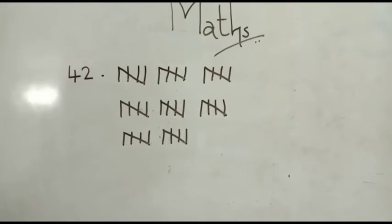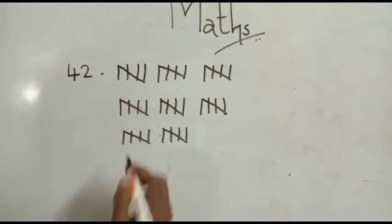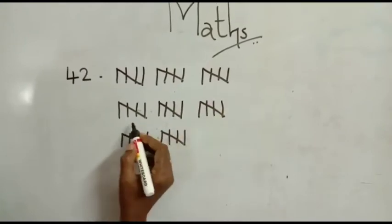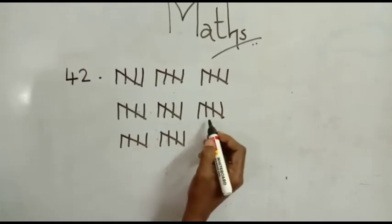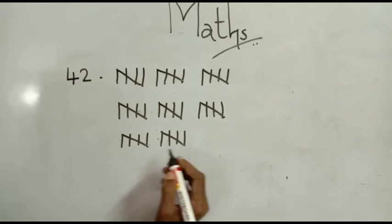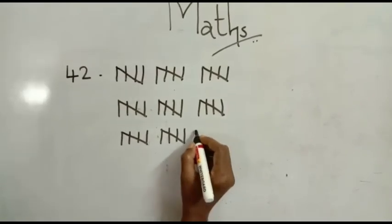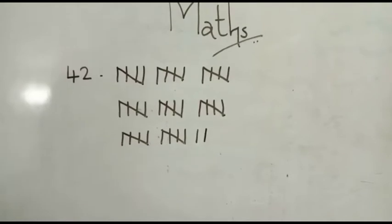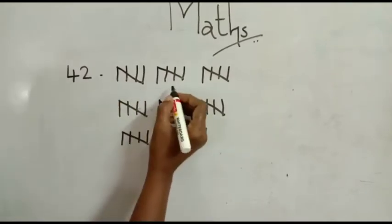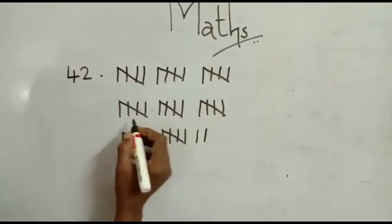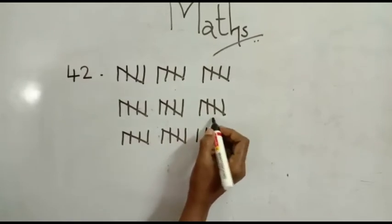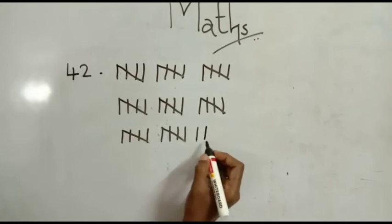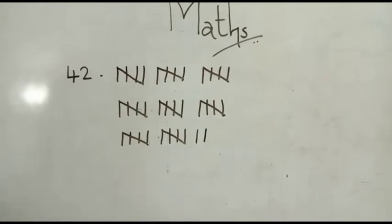Then tally mark of 42. 5, 10, 15, 20, 25, 30, 35, 40, 41, 42. Okay.